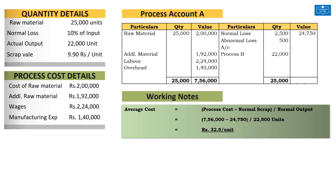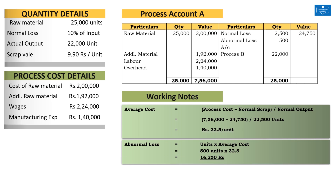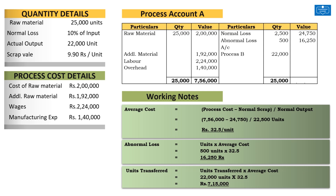Using this average cost of Rs. 32.50, we can calculate the abnormal loss. We lost 500 units due to abnormal reasons, and the value is 500 multiplied by Rs. 32.50 per unit, giving a total abnormal loss of Rs. 16,250. Similarly, we can calculate the value of units transferred to the next process: 22,000 units multiplied by Rs. 32.50 equals Rs. 7,15,000.